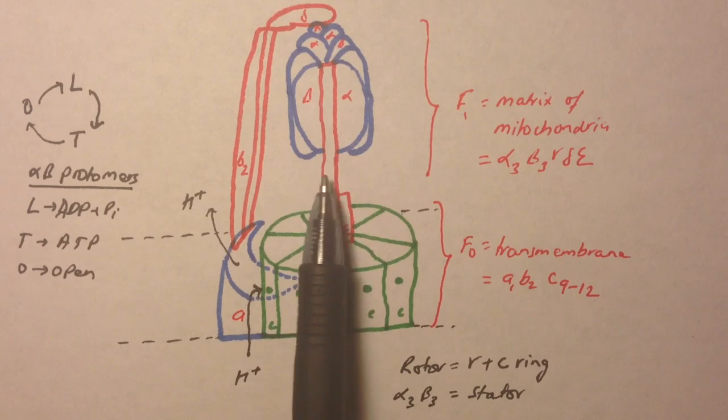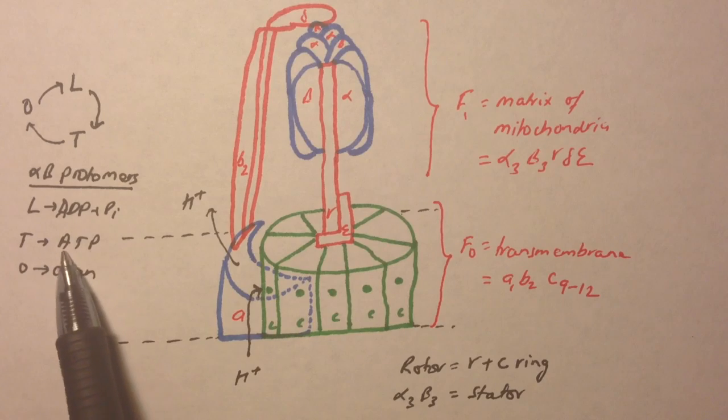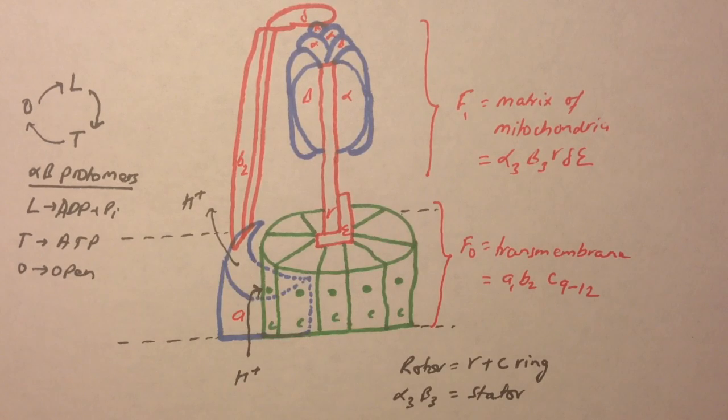In every rotation, in a complete rotation that this gamma subunit makes, 3.5 ATP can be made. So this is how ATP synthase molecule works. Hope you guys understood my video. Thank you for watching.